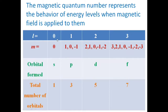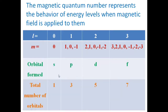If the value of L is zero, then the value of M is also zero, and the orbital form is the S-orbital. The S-orbital has a spherical structure, so the total number of orbitals is 1.